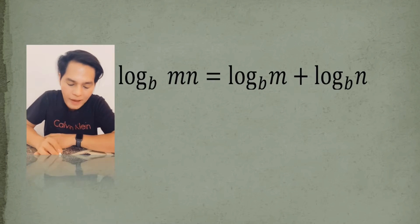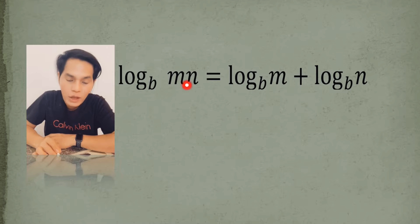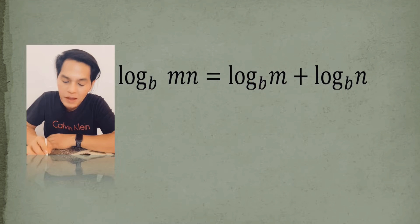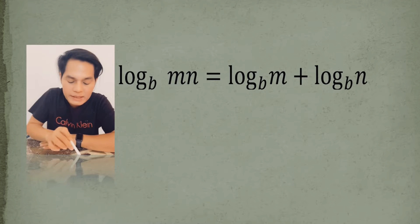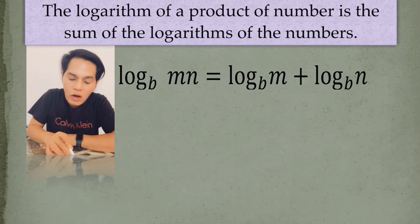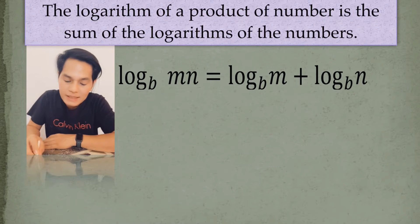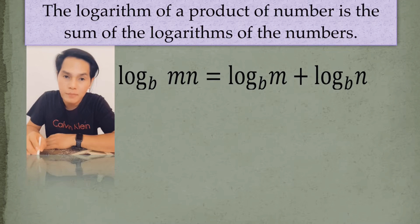The first law of logarithm is the log of mn to the base b is equal to the log of m to the base b plus the log of n to the base b, which means that the logarithm of a product of numbers is the sum of the logarithms of the numbers.